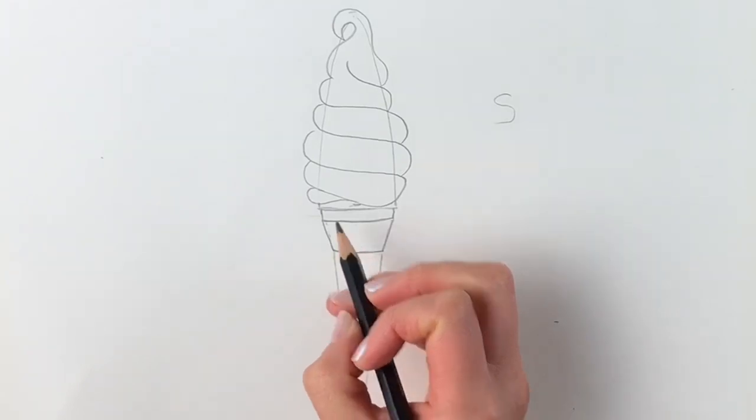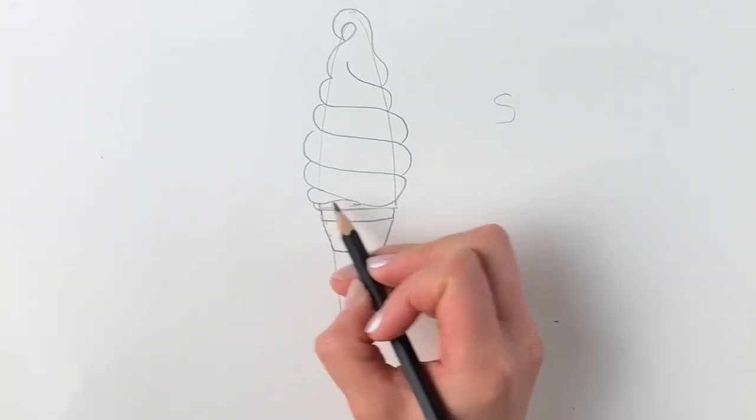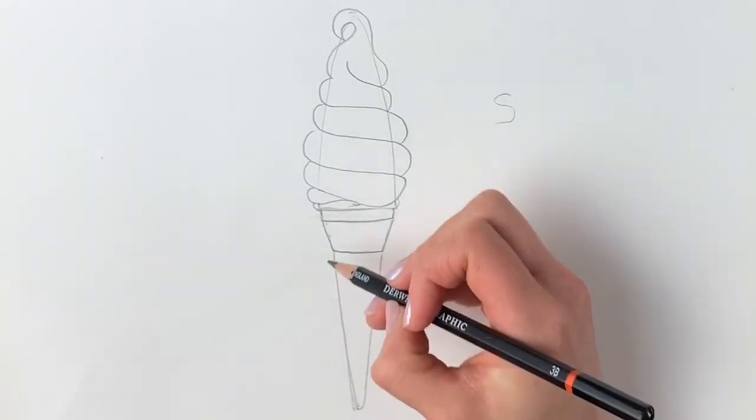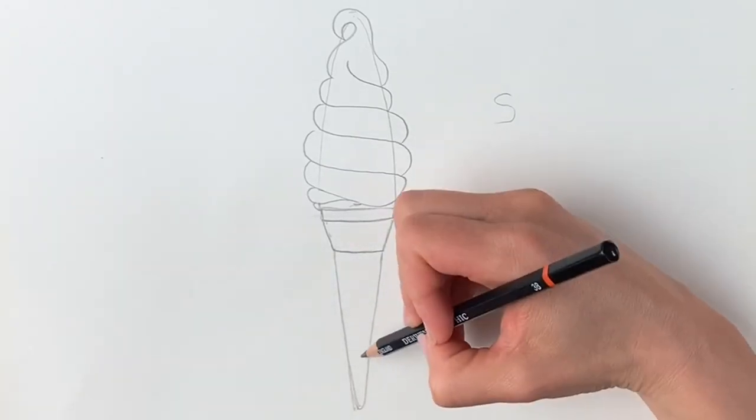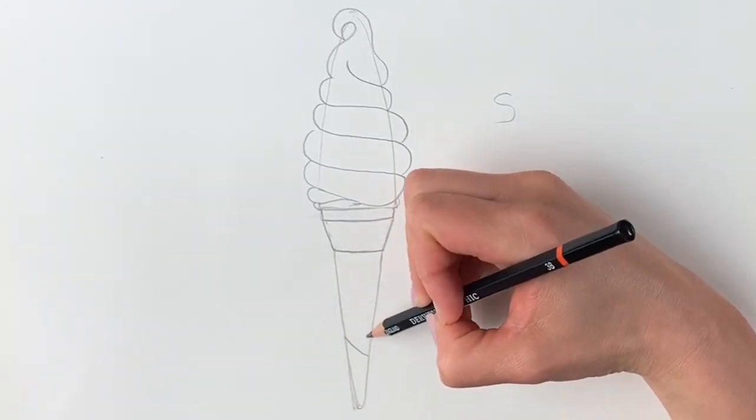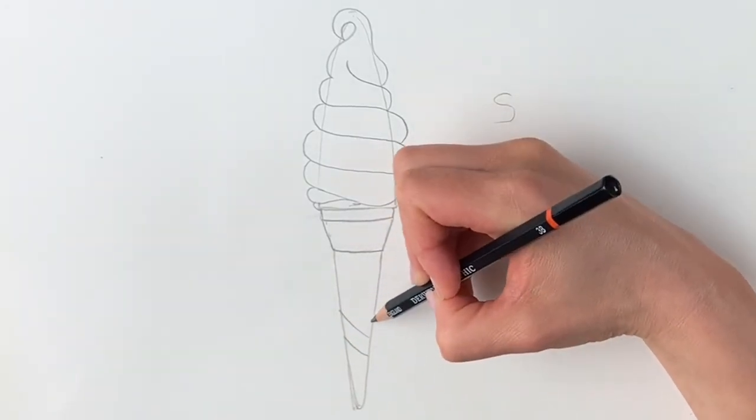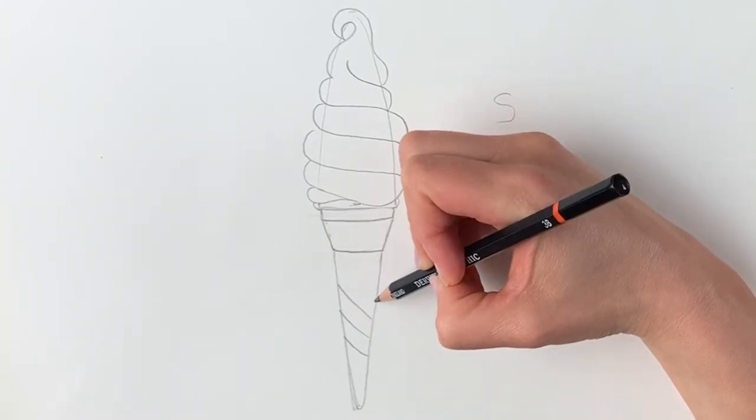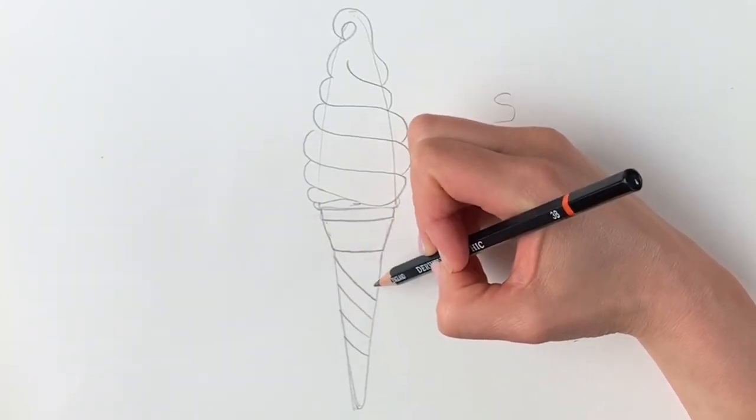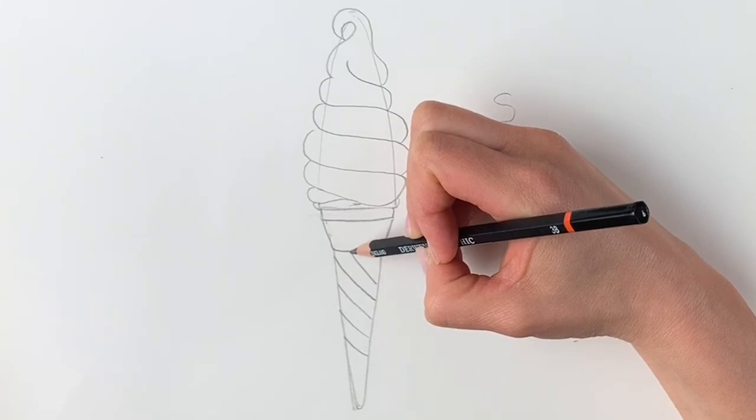Then a line coming across. Now we're going to draw some curved lines going upwards. Remember to pause the video if needed.